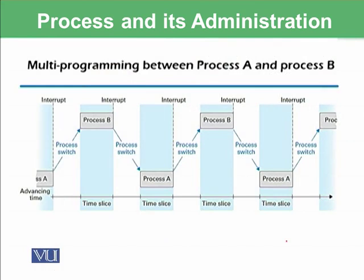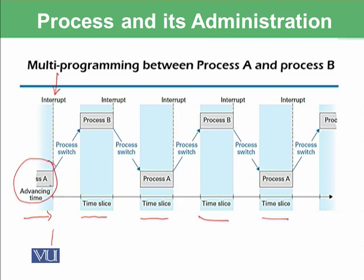This is a pictorial diagram for multiprogramming between process A and process B, showing the time slices for which each process is executing. First, process A is executing and the time circuit is activated. When the time circuit reaches the time slice — for example, 10 milliseconds — it generates an interrupt, causing a process switch, which means saving all the state of process A and moving to process B. Similarly, process B then executes, and this continues giving equal time slices alternately, which is one way of multiprogramming between process A and process B.